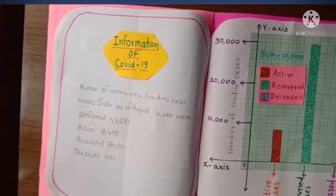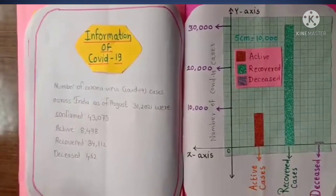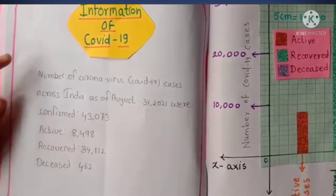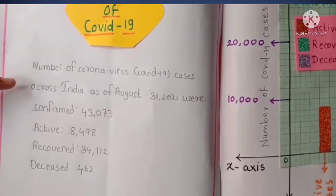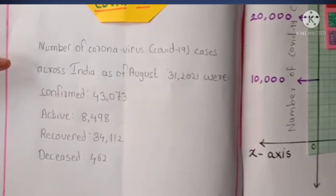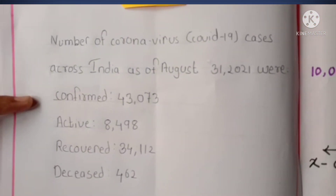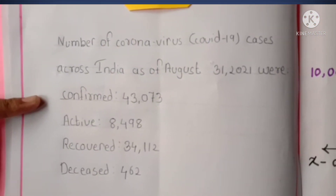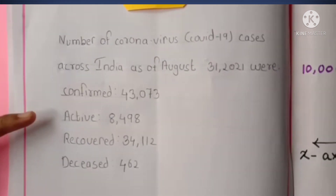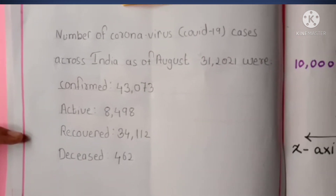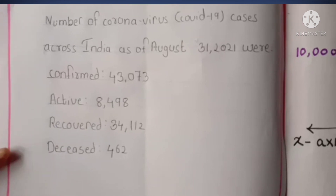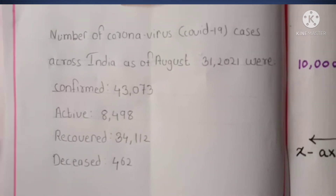Here is the information on COVID-19. The number of coronavirus COVID-19 cases across India as of August 31, 2021 were: confirmed 43,073; active 8,498; recovered 34,112; deceased 462.